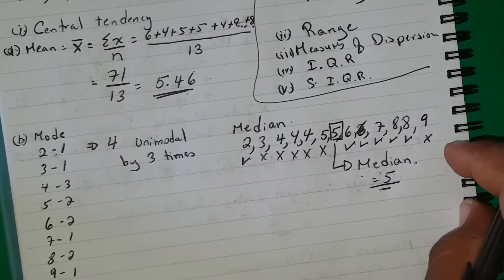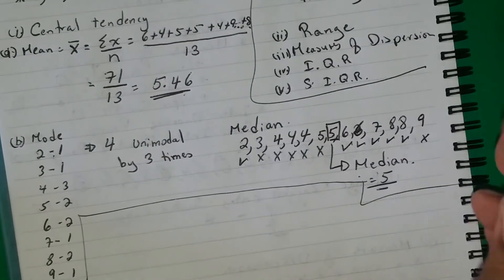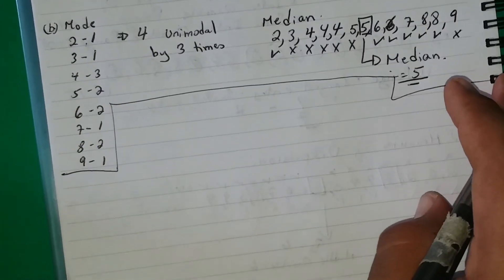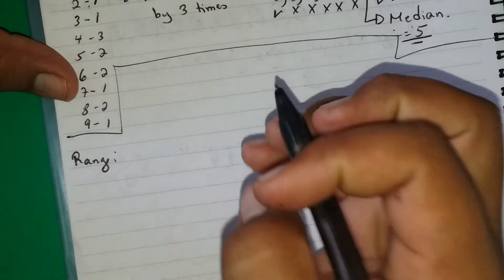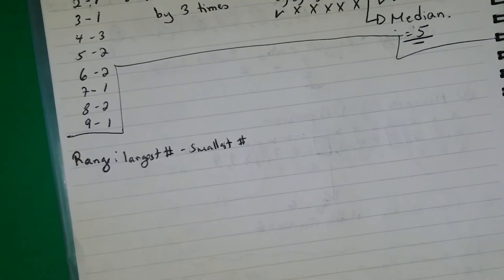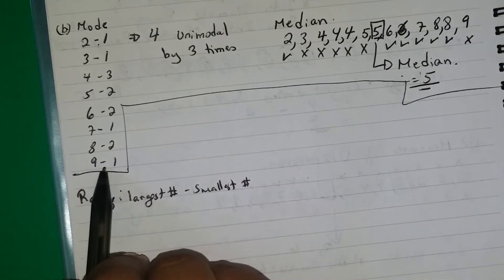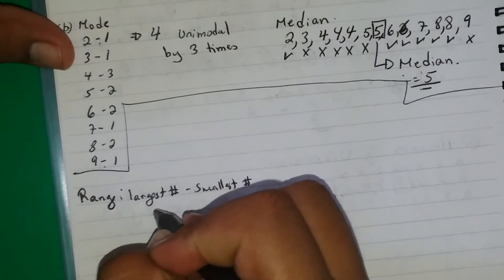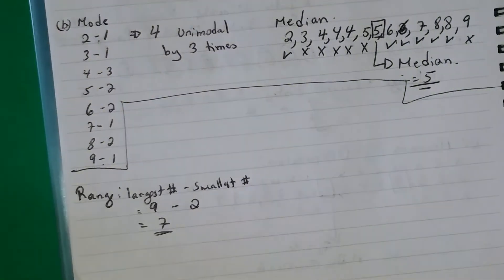And that is what we have for the measures of central tendency. Moving on, we want to find the range. The range is the largest entry minus the smallest number. The largest entry is 9 and the smallest is 2, so that's 9 minus 2, which gives us an answer of 7.